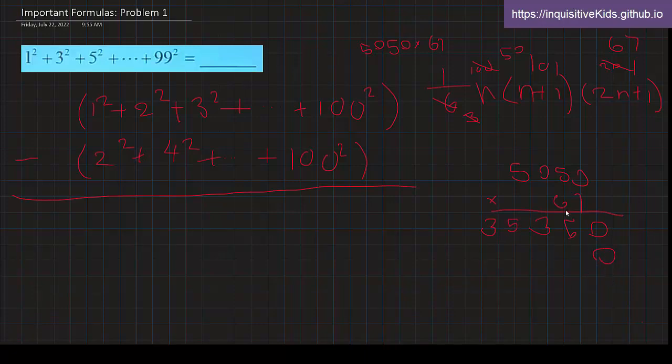And for the tens place, we get 0, 0, 3, 3, 0. Okay, so 303, and we add that, 0, 5, 3, 8, 3, 3. So this is what the top part equals, 338,350.